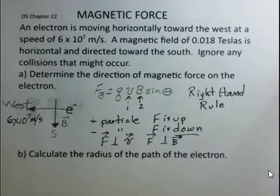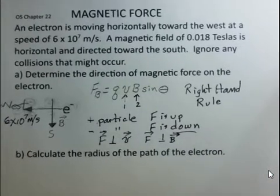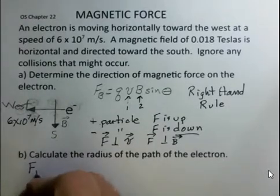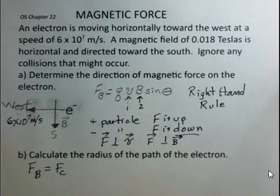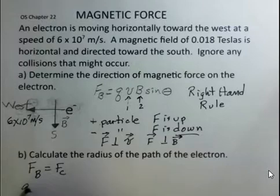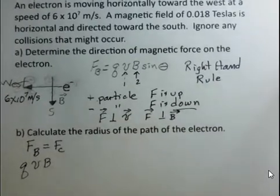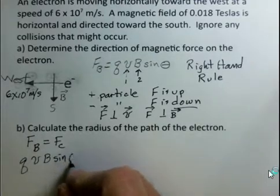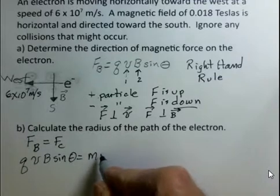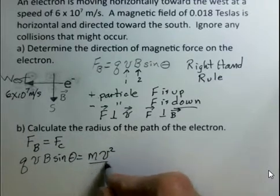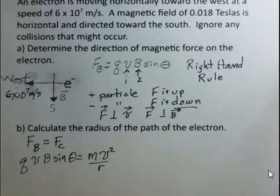What's the radius of the circle that this electron travels on? Well, the magnetic force is supplying the centripetal force. Our magnetic force is QVB sine theta. Our centripetal force, mass of the electron, and then V squared over R. We're seeking to calculate R, the radius of this circle.